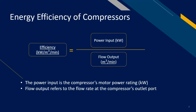Now we will move on and determine how to define energy efficiency of compressors. Compressors are commonly rated with their motor power rating. Flow output refers to the actual flow at the compressor outlet port. Therefore, to calculate the energy efficiency, the power input in kilowatts is divided by the flow output in cubic meters per minute to get the compressor efficiency in kilowatts per cubic meter per minute.